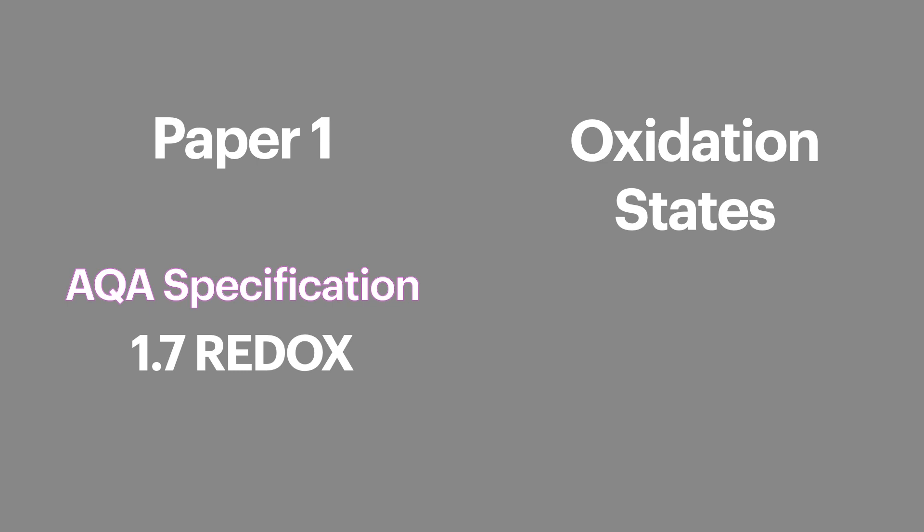To do this we're going to look at the different rules for working out oxidation states before looking at several examples. This is the first video of AQA topic 1.7 redox reactions and is on paper one of your final exams.